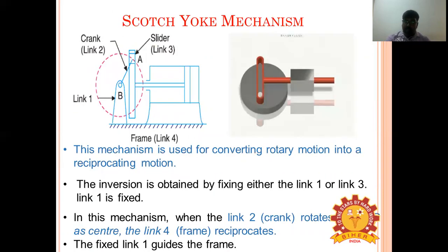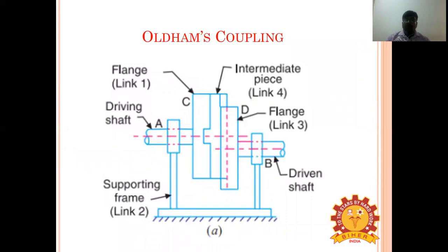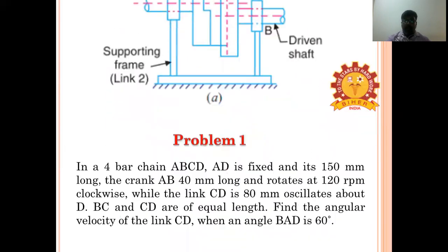The Scotch yoke mechanism is used for converting rotary motion into reciprocating motion by means of two sliders — one is the piston and another is the slider, both sliding. Oldham's coupling is a mechanism used to transmit motion between two shafts which are parallel but not coaxial.